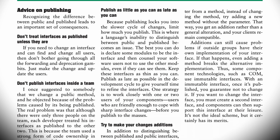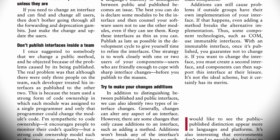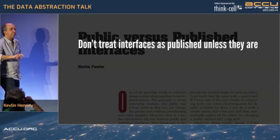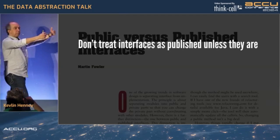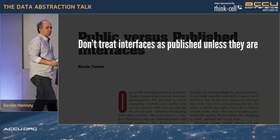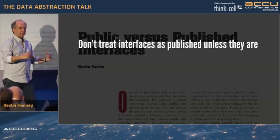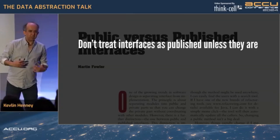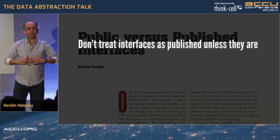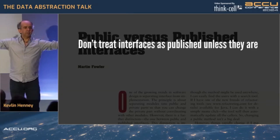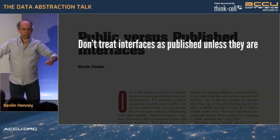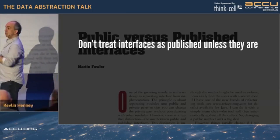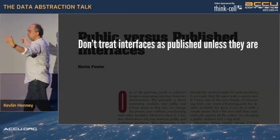Don't treat interfaces as published unless they are. In other words, allow yourself the ability to change stuff freely and radically, if needs be, within your own group. Find where the boundary is — hopefully it's not just around you, otherwise you have some code ownership and management issues already. Where is the boundary where you need to start having meetings, or people start complaining when you do certain things? Is it within your organization, or is it a boundary to another organization?